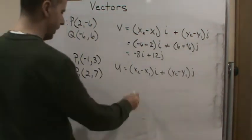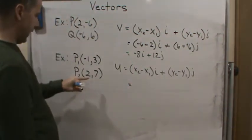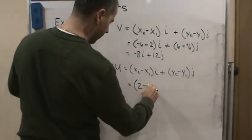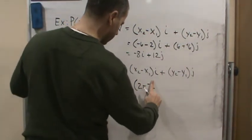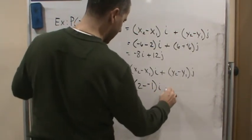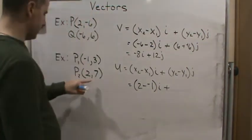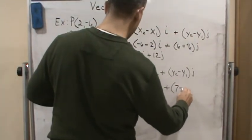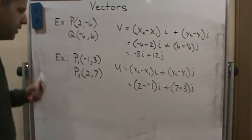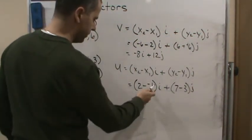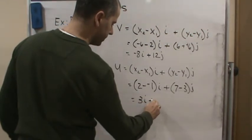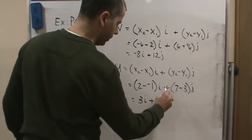And so now it's going to be x2. So that's 2 minus negative 1 times i plus 7 minus 3 times j. So now I just simplify it. This is going to give me 3i plus 4j.